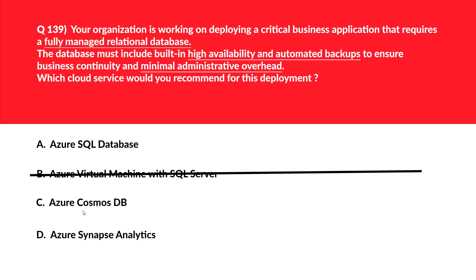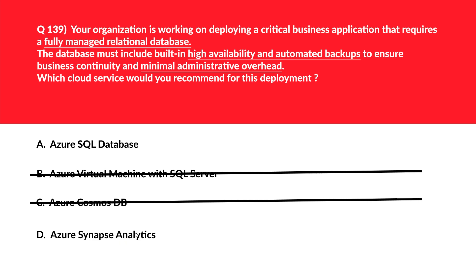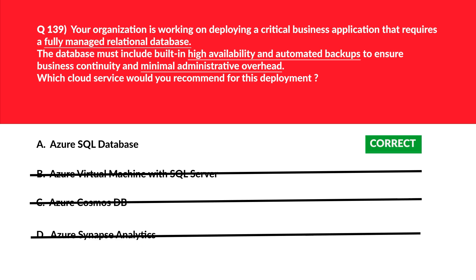Let's look at option C. C says Azure Cosmos DB. Cosmos DB is not a relational database which is required by the question, so let's remove it. We'll move to D. D says Azure Synapse Analytics. Synapse Analytics is used for big data and analytics processing — it's a data warehouse solution and not suitable for relational databases. There's a difference between OLAP and OLTP. Synapse is like overkill — we need a car to travel to our office, not a rocket. Let's remove it. We'll lock option A, Azure SQL Database, as the right choice.